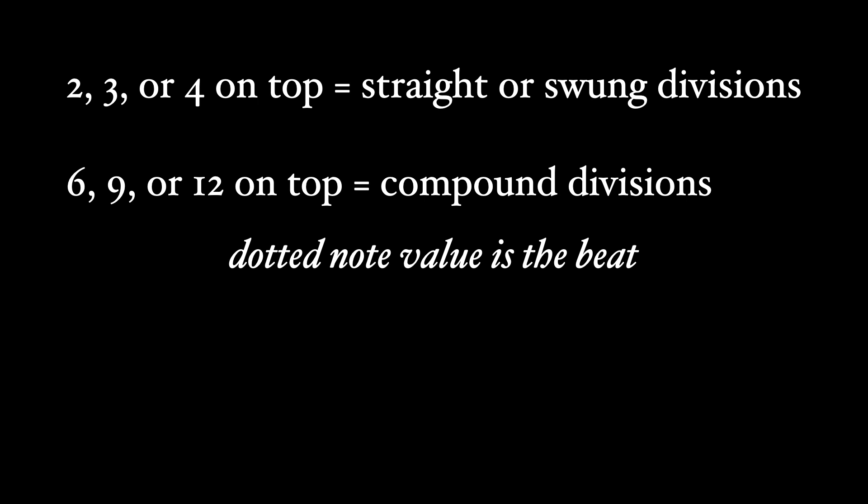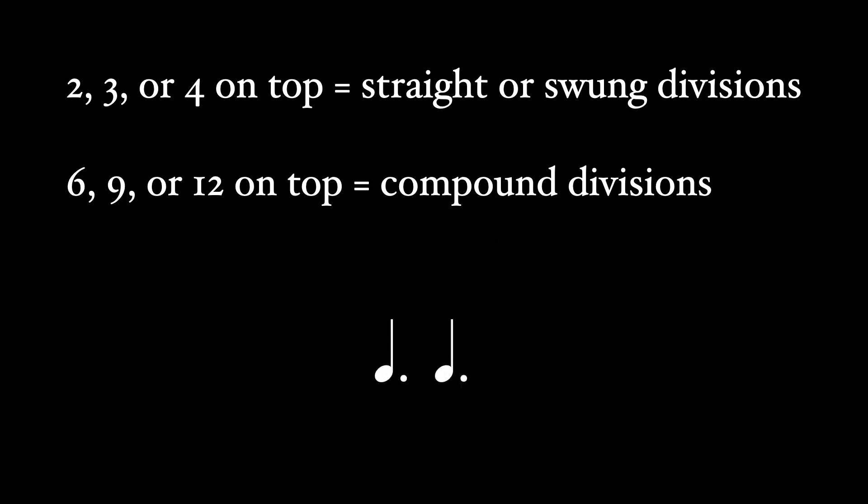For example, a dotted quarter note divides into three eighth notes. So if we want compound duple meter, we need a time signature that shows that there are two dotted quarter notes per measure. Unfortunately, there isn't a way to indicate a dotted quarter note with the denominator of a fraction. We can't really put a two-three time signature. That doesn't make any sense. So we need instead to use the beat division as the basis for the time signature.